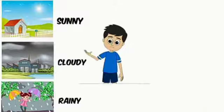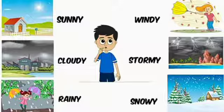There are six types of weather: sunny, cloudy, rainy, windy, stormy, and snowy.